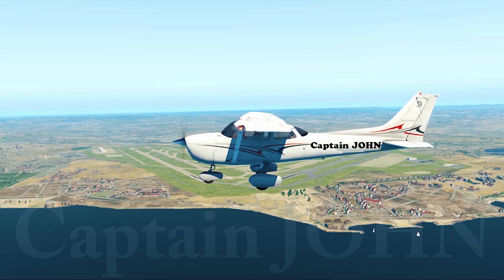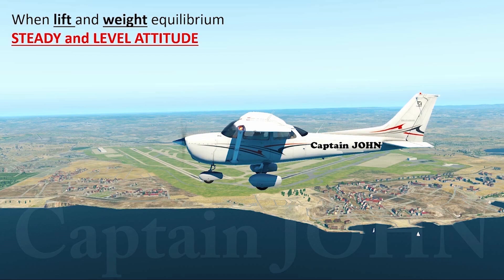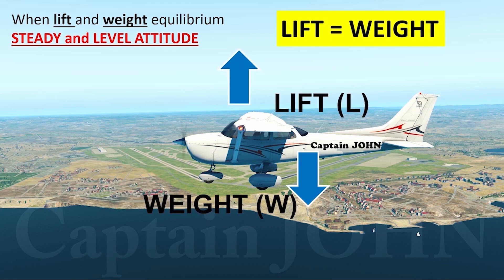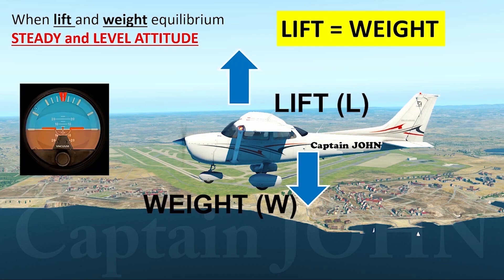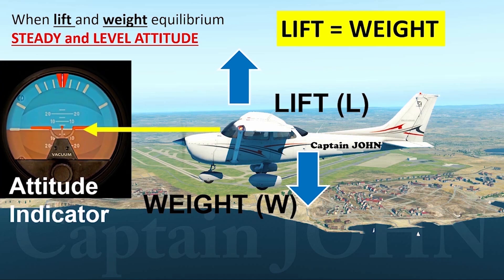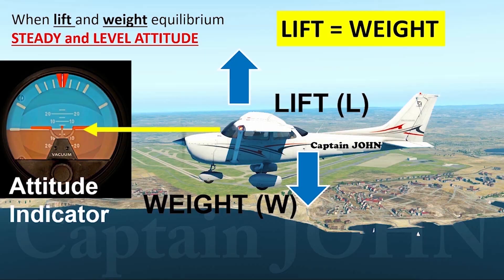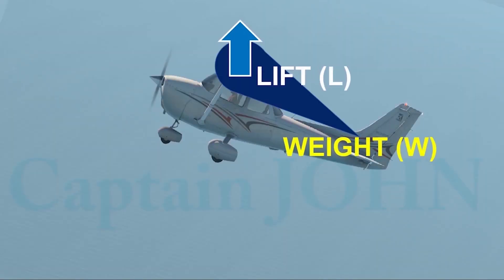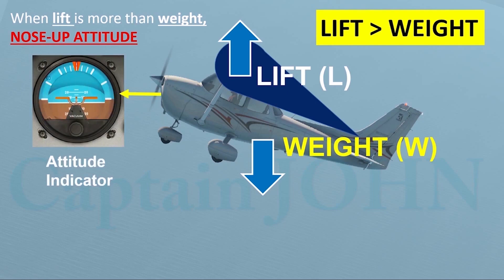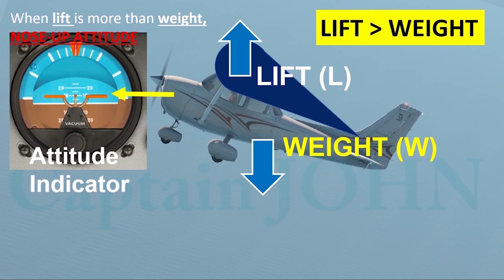When we look at the lift-weight relationship: if the aircraft does not climb or descend, lift and weight are equal. When lift and weight are equal, the aircraft maintains its attitude and flies steadily — technically this is called steady and level attitude. As you can see from the attitude indicator, the aircraft's status appears to be zero at the horizon. If weight is more than lift, the plane cannot hold in the air. If lift is more than weight, our aircraft tends to climb — technically we call it a nose-up attitude.